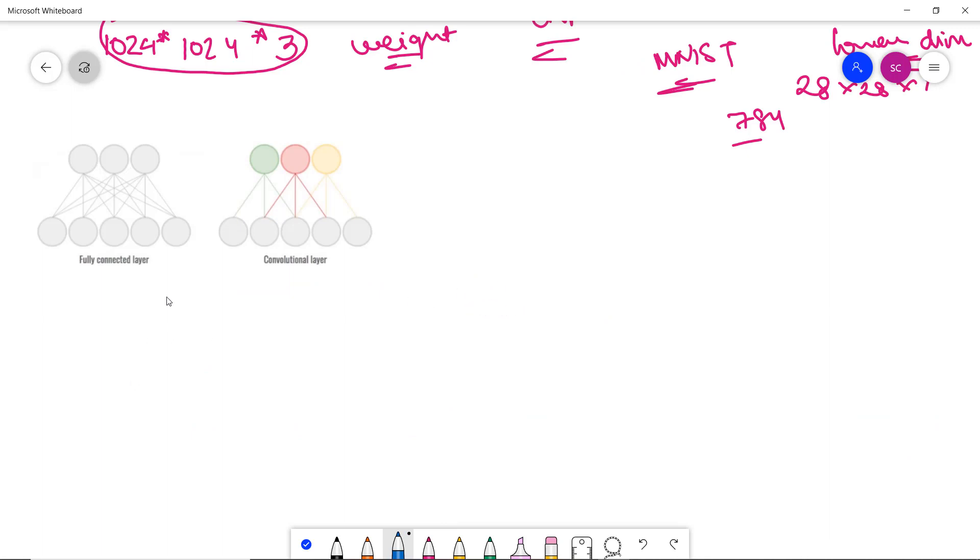Here you can see a fully connected layer in the feed-forward neural network where all inputs are managed according to their weights to the next set of neurons. But in the convolutional layer, not all neurons are connected to the next layer. This particular neuron has no connection with this particular layer. This is what happens in CNN—not all neurons are connected to the next layer, which does happen in feed-forward.